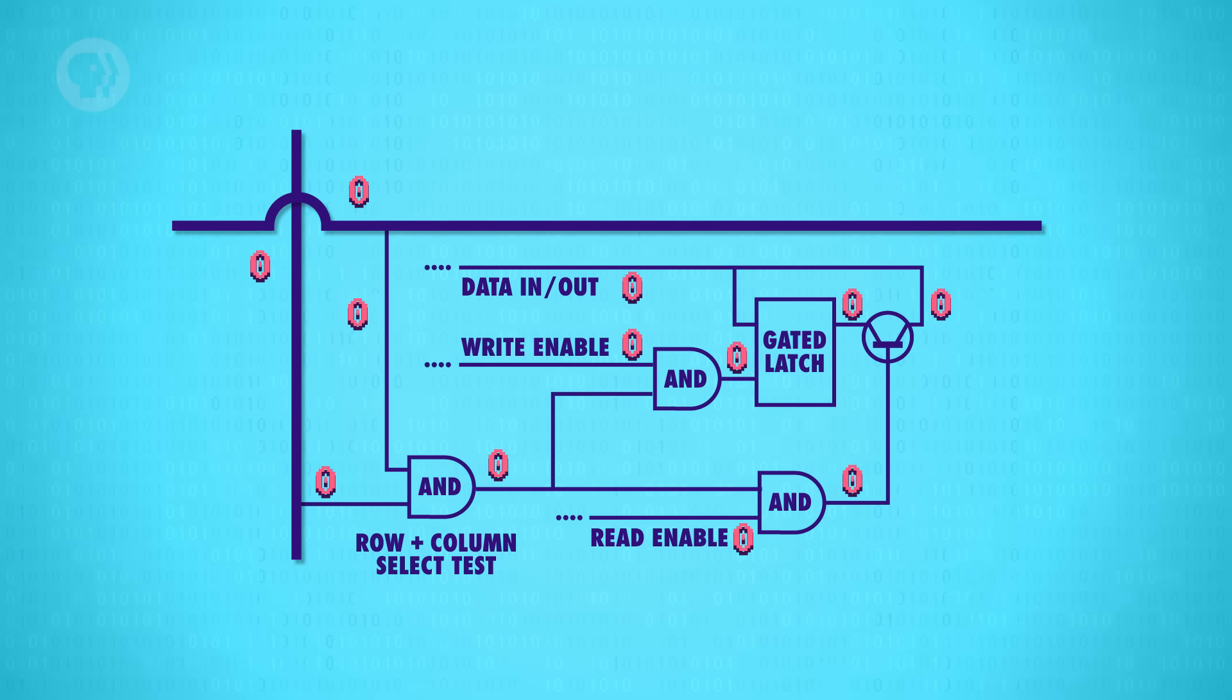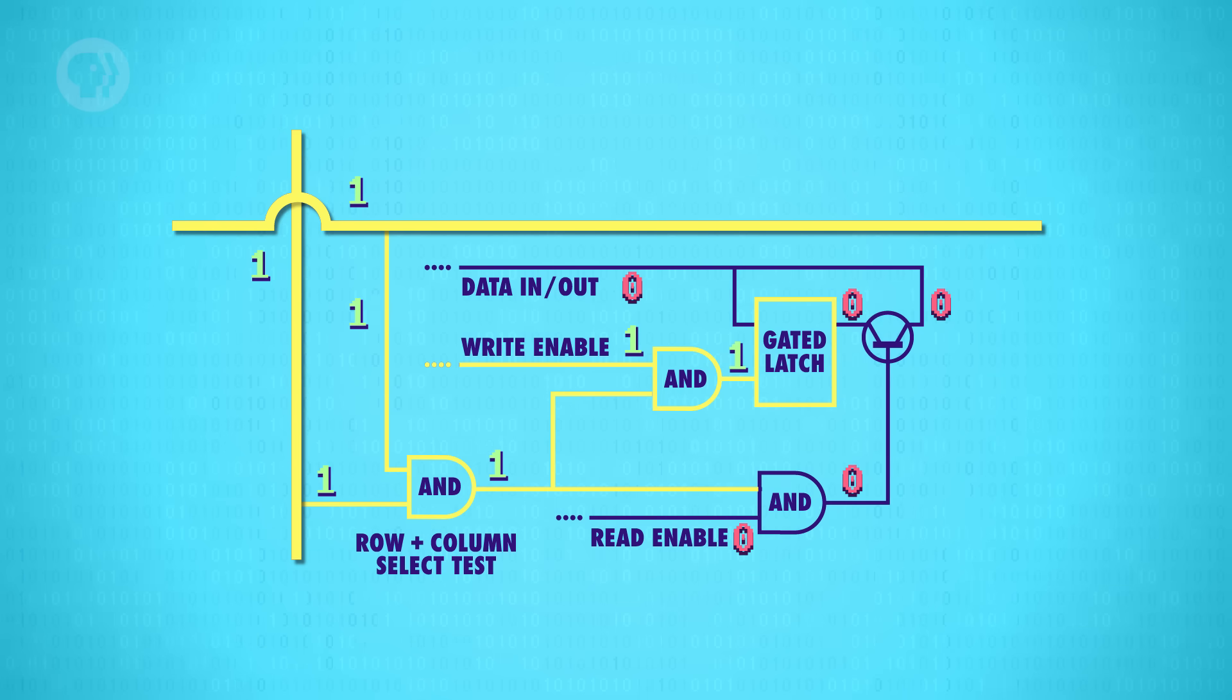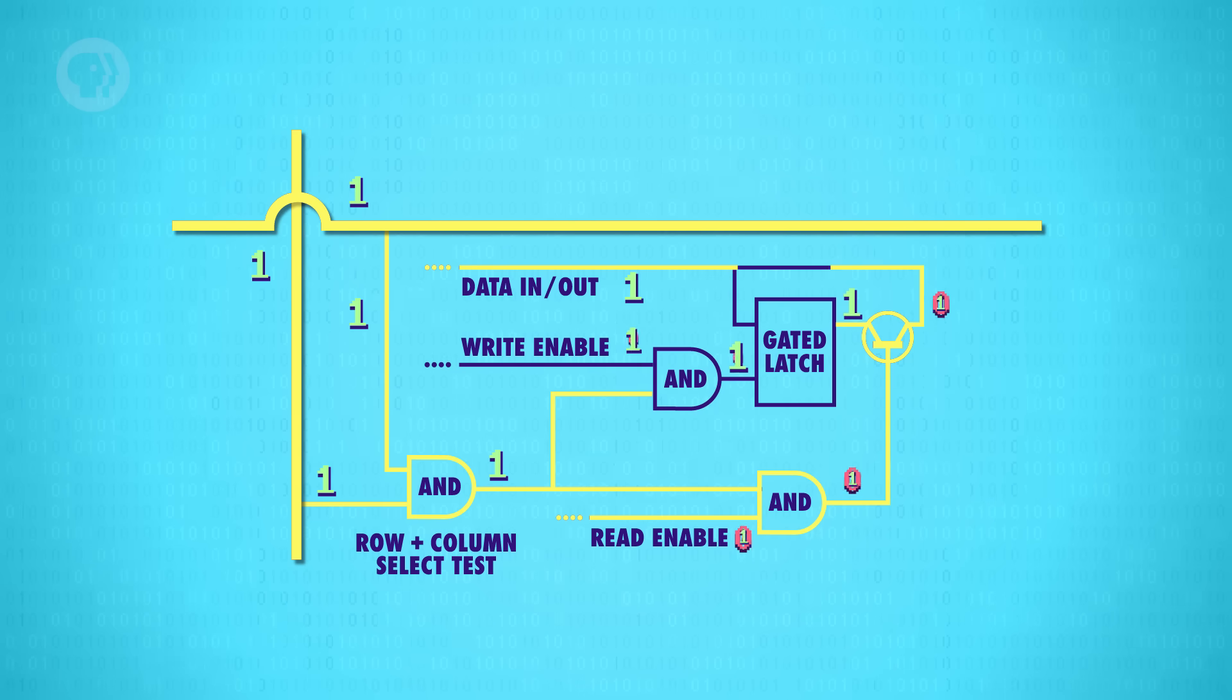This row and column setup connects all of our latches with a single shared write-enabled wire. In order for a latch to become write-enabled, the row wire, the column wire, and the write-enabled wire must all be 1. That should only ever be true for one single latch at any given time. This means we can use a single shared wire for data, because only one latch will ever be write-enabled. Only one will ever save the data. The rest of the latches will simply ignore values on the data wire, because they are not write-enabled. We can use the same trick with a read-enabled wire to read the data later, to get the data out of one specific latch.